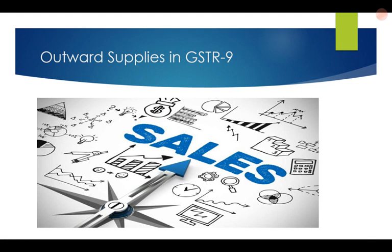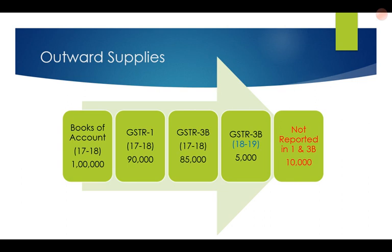They told me that in the books of account for 2017-18, the outward supplies figure was Rs 1 lakh. In GSTR1 of 2017-18, the total figure is Rs 90,000. In GSTR3B through which taxes were paid for 2017-18, the figure shown is Rs 85,000. In GSTR3B of 2018-19 where 2017-18 figures were reported, the amount is Rs 5,000. Additionally, there are some invoices amounting to Rs 10,000 shown neither in GSTR1 nor in GSTR3B. So there are different sales figures — the question is which one to use in GSTR9.